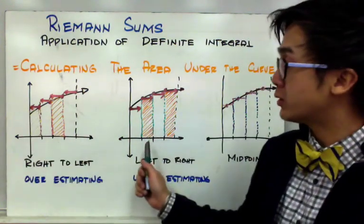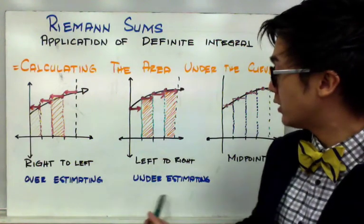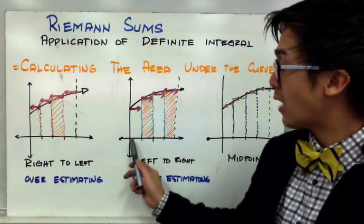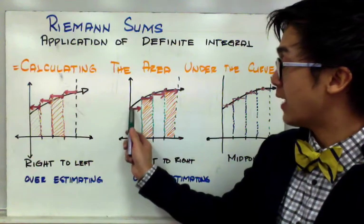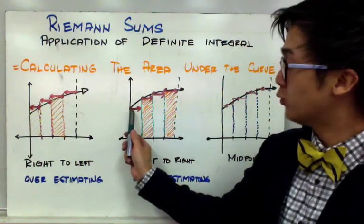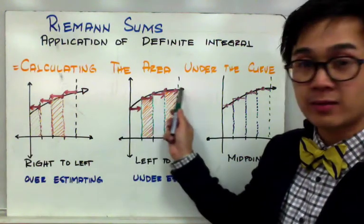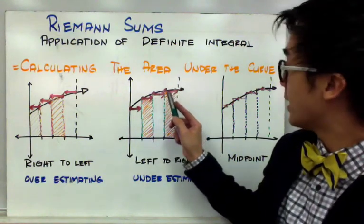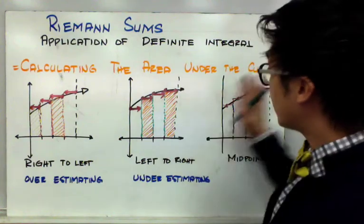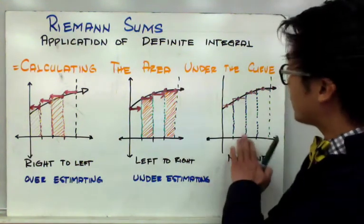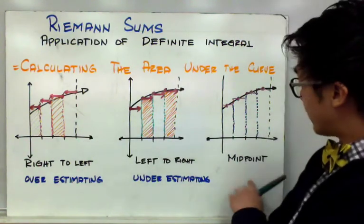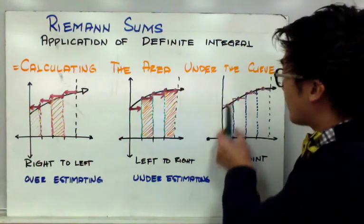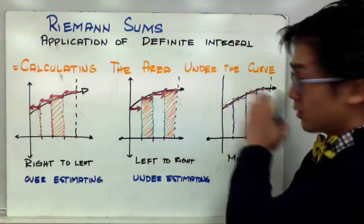The second method is the left-to-right method, which gives us an underestimated area under the curve using rectangles. You start at the leftmost side of your rectangle and move to the right — that's why it's called the left-to-right method. The underestimated area is the portion not covered by your rectangles. The most accurate estimate among the three methods is the midpoint method, where we start at the middle of each rectangle to approximate the area under the curve.